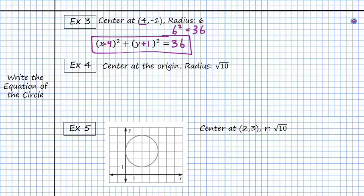Then for example 4, we have the center at the origin, and remember that origin is that point at (0, 0), and my radius is √10. Well, we know that √10 squared will just give me 10.